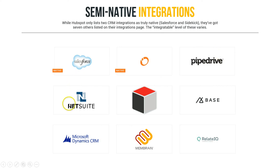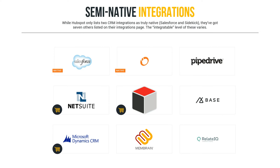These other ones are what I consider semi-native — semi-native because HubSpot considers them a good enough integration that they're going to list them. Even though beyond these nine, there's a dozen other CRMs out there that are very good. We have a couple that are paid integrations: SugarCRM, NetSuite, and Microsoft Dynamics. These three all have an integration with a third party that charges you for the integration — around $150 a month.